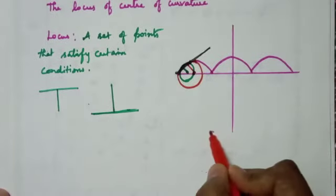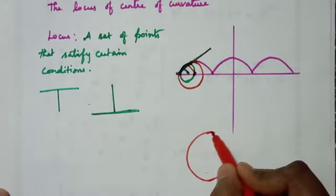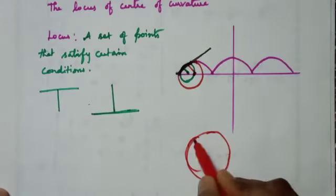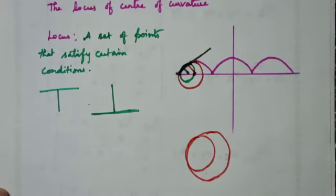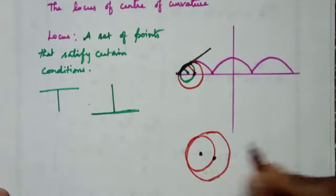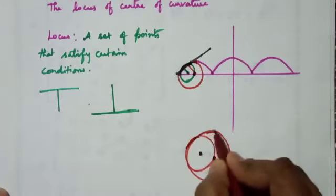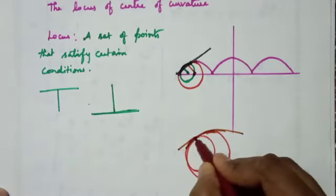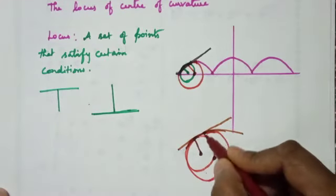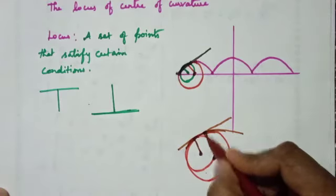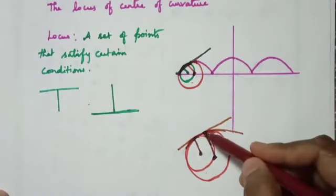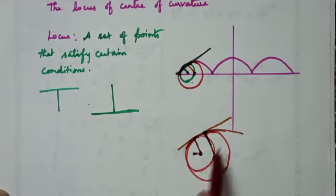So now we have a circle here — the circle of curvature. Here is the center of this circle, and at that point there is a tangent line and a normal line, which is perpendicular to the tangent. You can zoom into the diagram to see this clearly. In the points on the curve, you can choose another point.